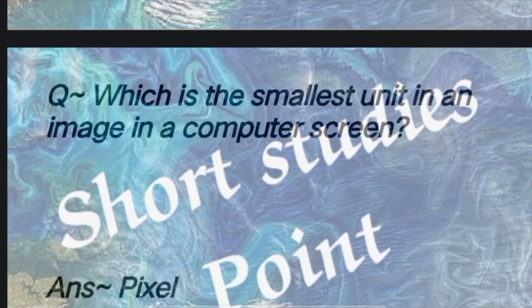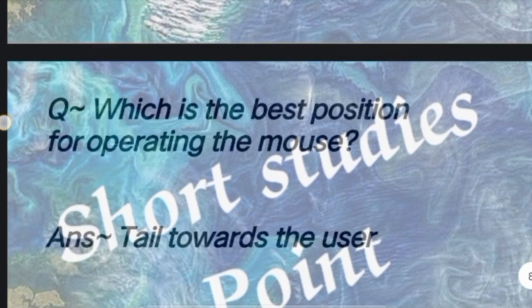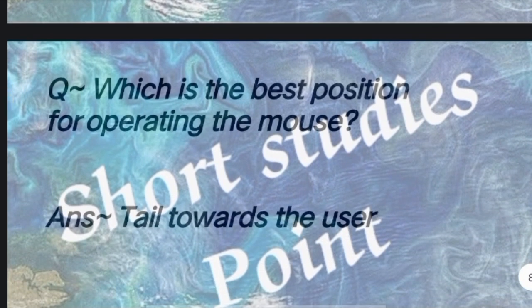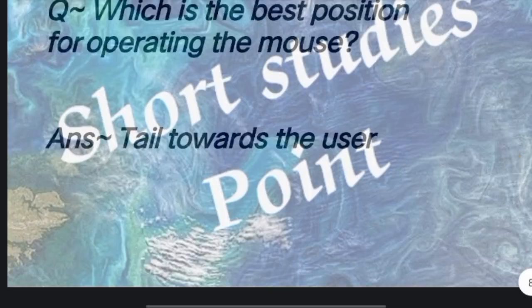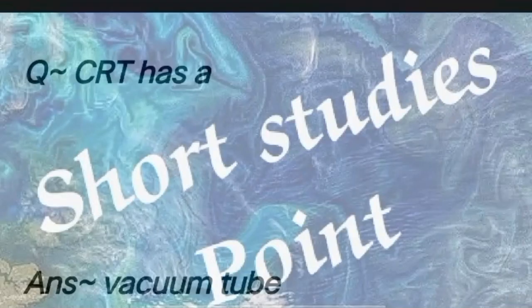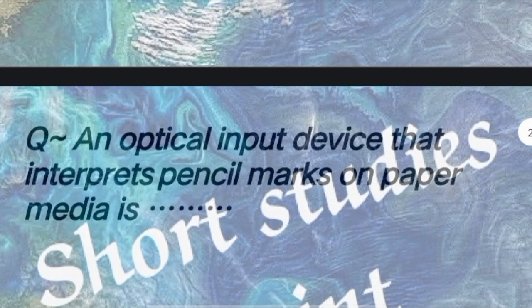Next question: Which is the smallest unit in an image on a computer screen? Answer: Pixel. Next question: Which is the best position for operating the mouse? Answer: Sensor tilted towards the user. Next question: CRT has? Answer: Vacuum tube.